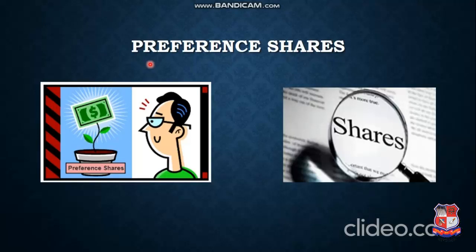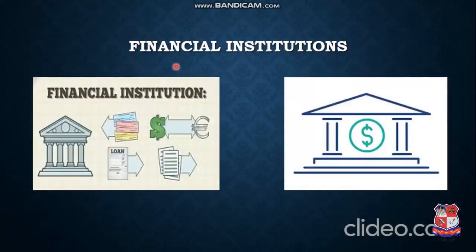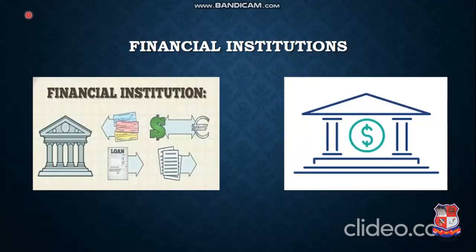One more source is financial institutions. Financial institutions may include some government or non-government organizations that provide some amount of money to the entrepreneur, or motivate and encourage an entrepreneur to grow his business by providing some amount of subsidy. Indirectly they are giving money to the entrepreneur to develop his business. That is called a financial institution.